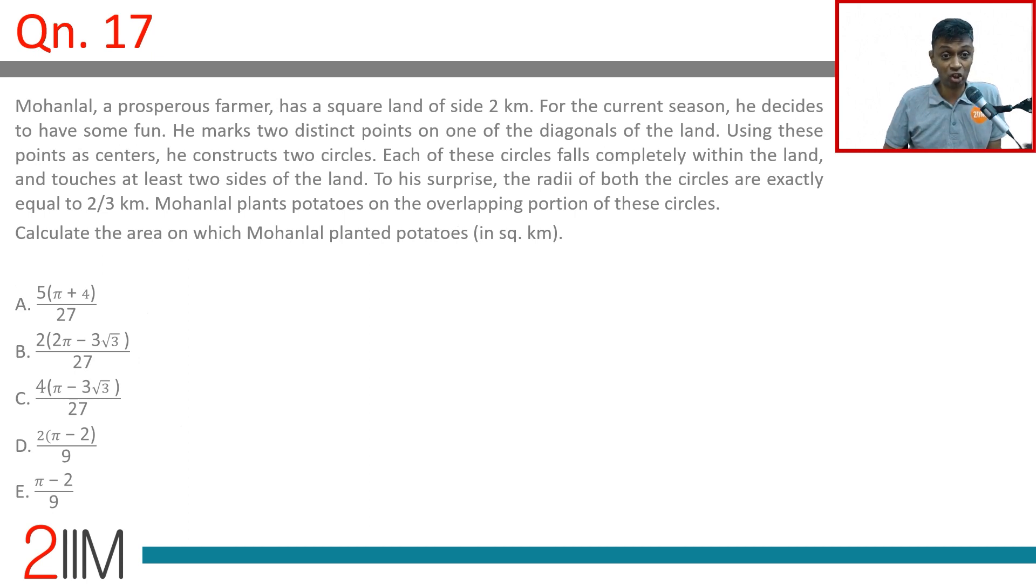Mohanlal, a prosperous farmer, has a square land of side 2 kilometers. For the current season, he decides to have some fun. He marks two distinct points on one of the diagonals of the land. Using these points as centers, he constructs two circles. Each of these circles falls completely within the land and touches at least two sides of the land. To his surprise, the radii of both circles are exactly equal to 2/3 kilometers. Mohanlal plants potatoes on the overlapping portion of these circles. Calculate the area on which Mohanlal planted potatoes.